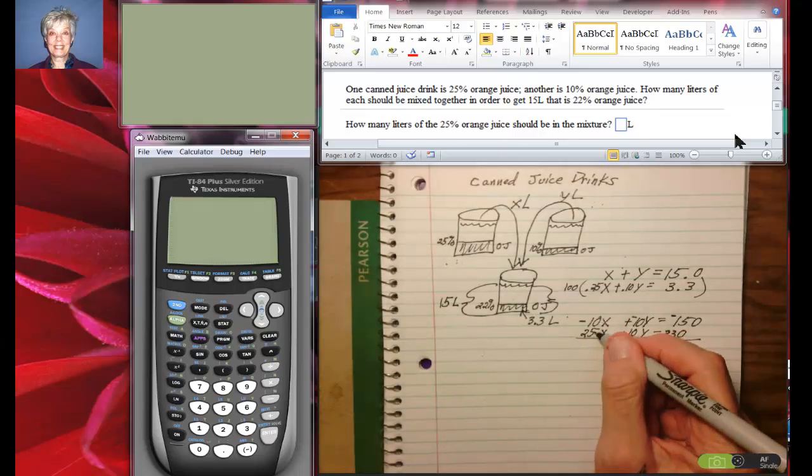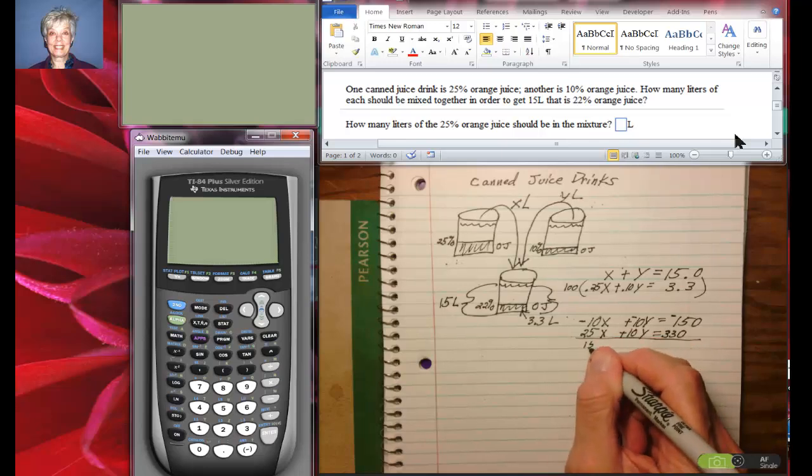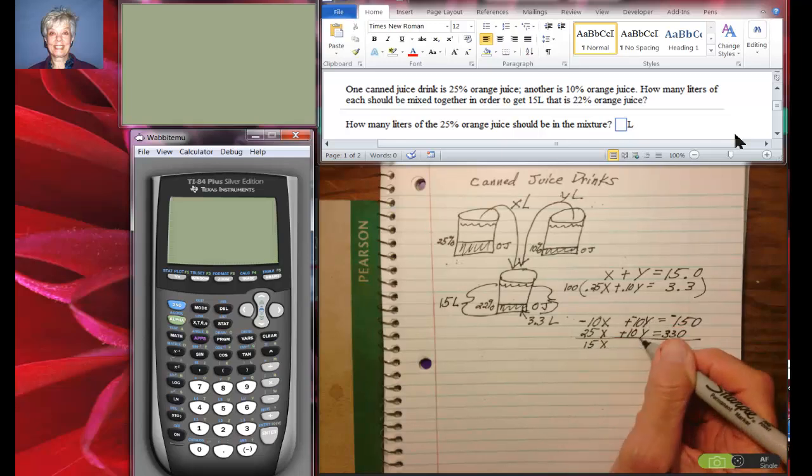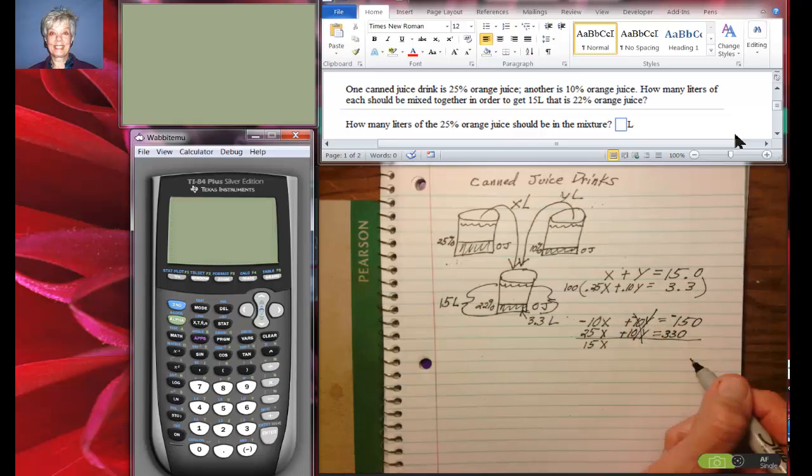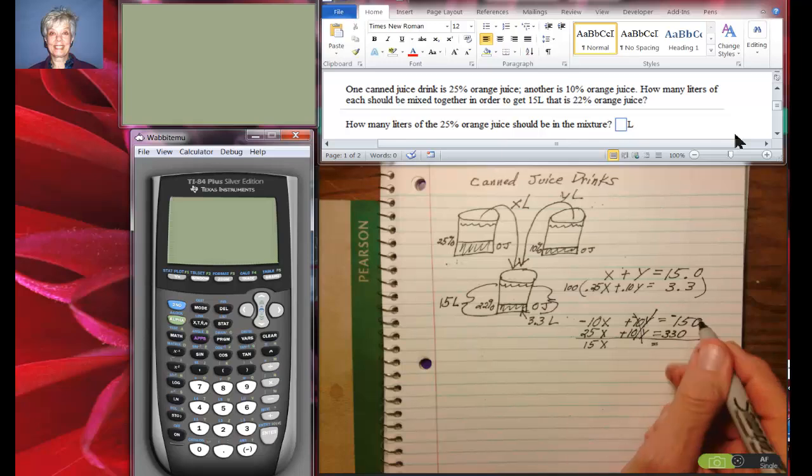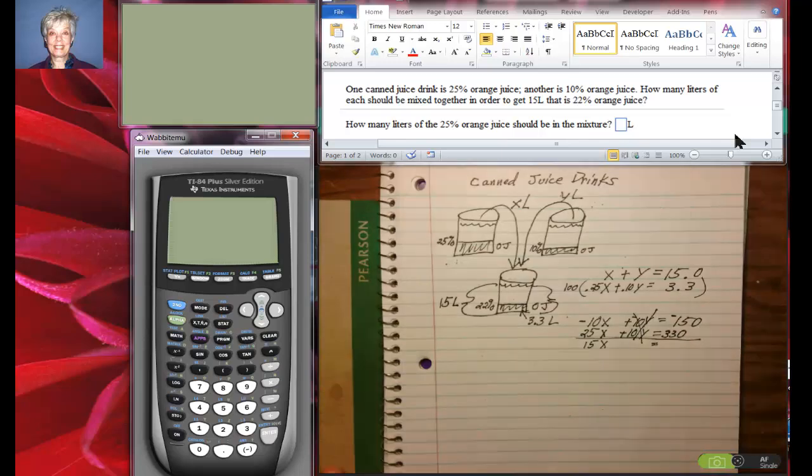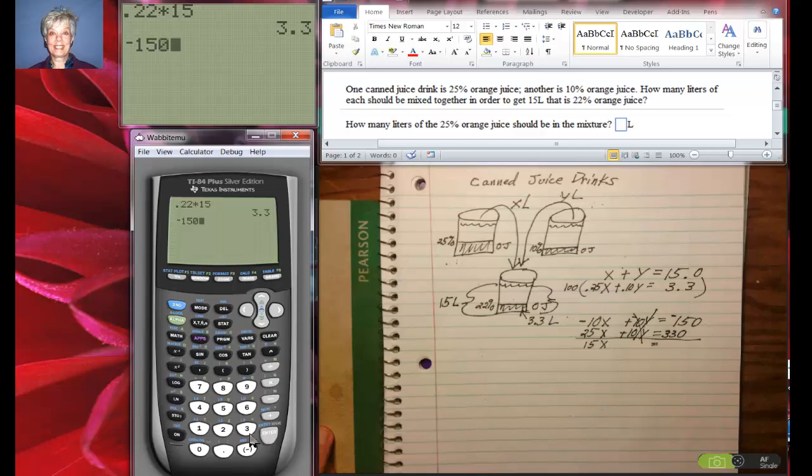I'm going to add these together and get 15x, going to add these together and get zero, which was the whole reason for doing that. And I'm going to add these together and I'm going to say negative 150 plus 330, enter, is going to be 180.